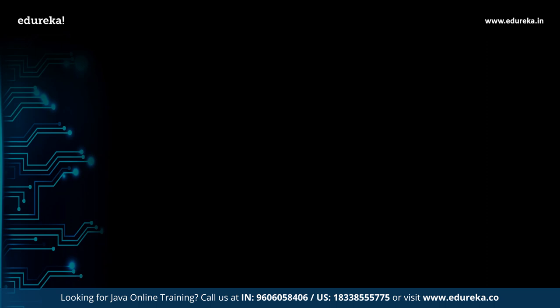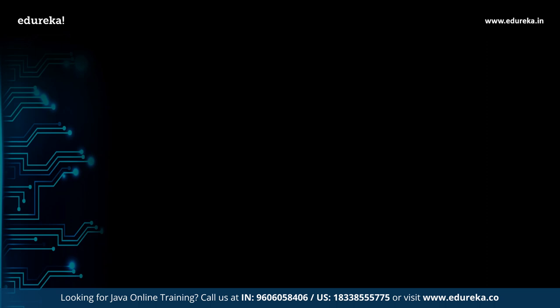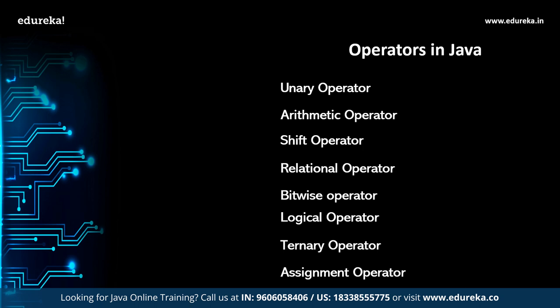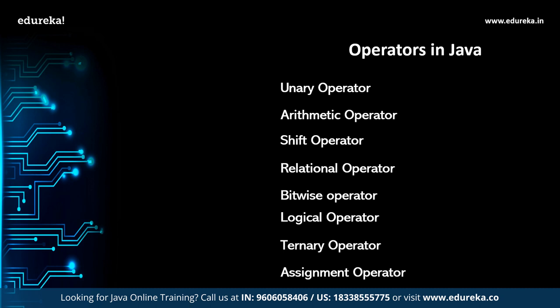Now let us look at the operators available in Java. Operators are special symbols used with variables and numbers to carry out specific operations. The various operators in Java are: unary, arithmetic, shift, relational, bitwise, logical, ternary, and assignment operators. The Java unary operator requires only one operand and is used to perform operations such as incrementing or decrementing a value by one, negating an expression, or inverting the value of a boolean.